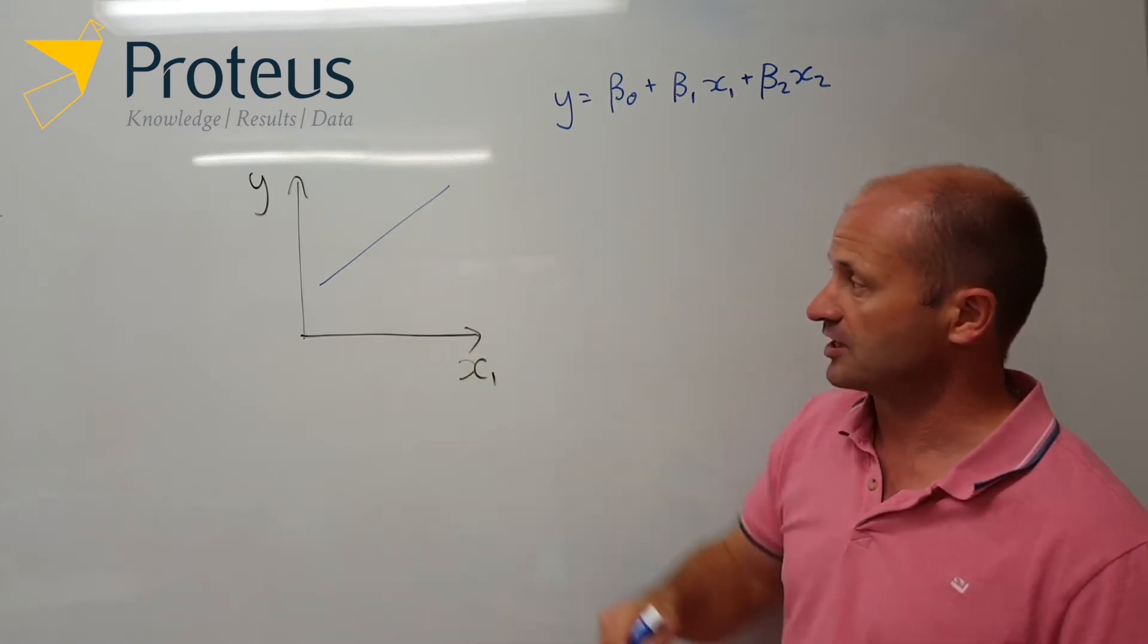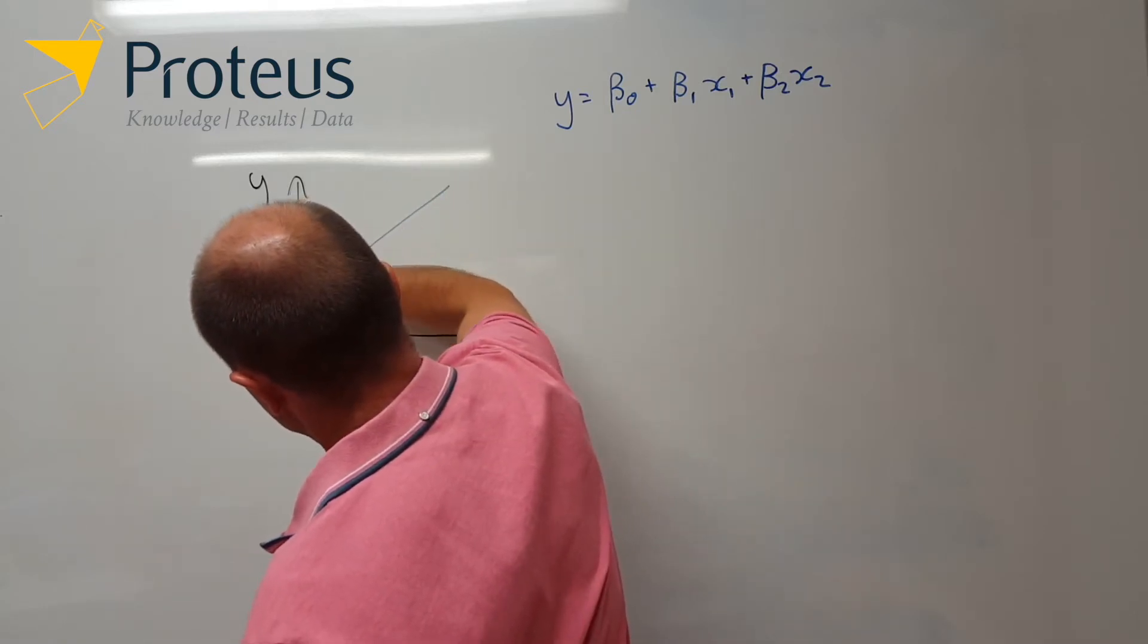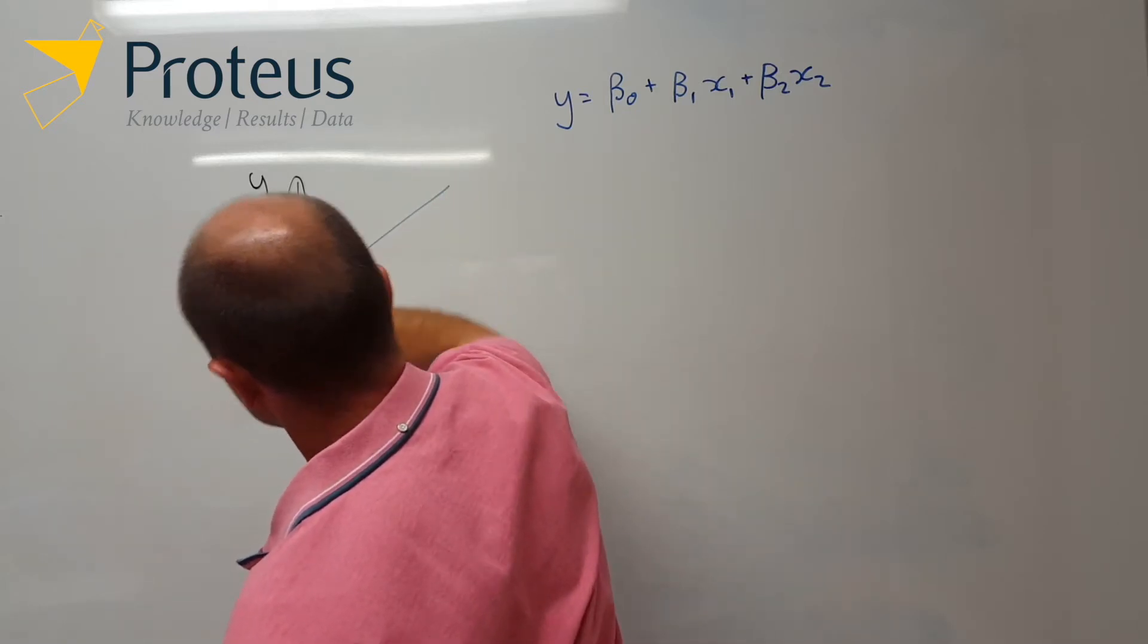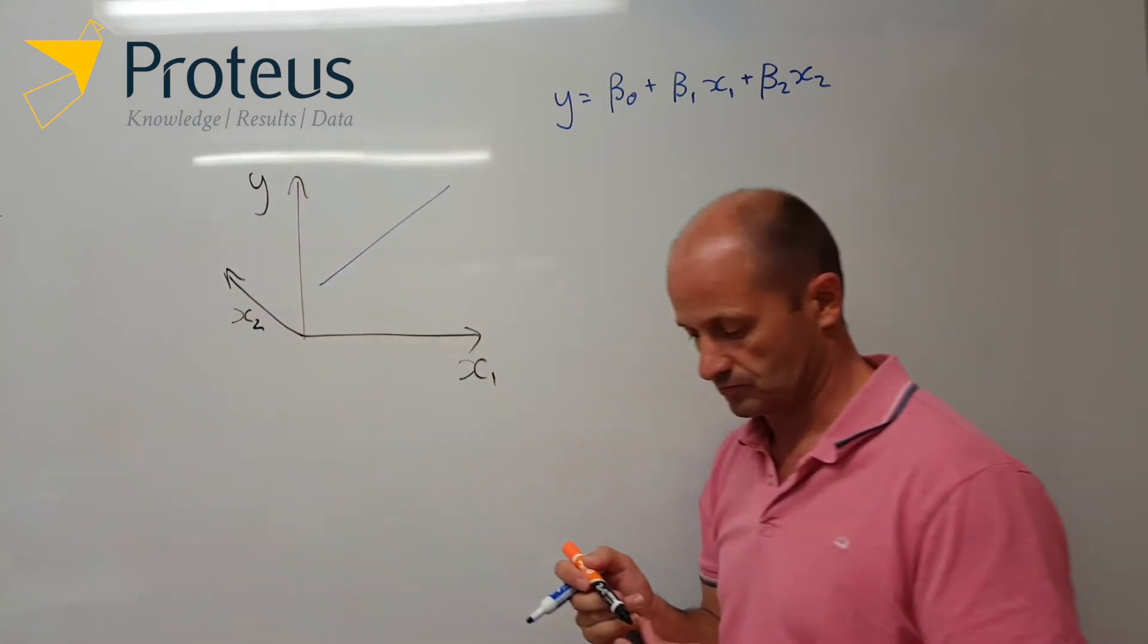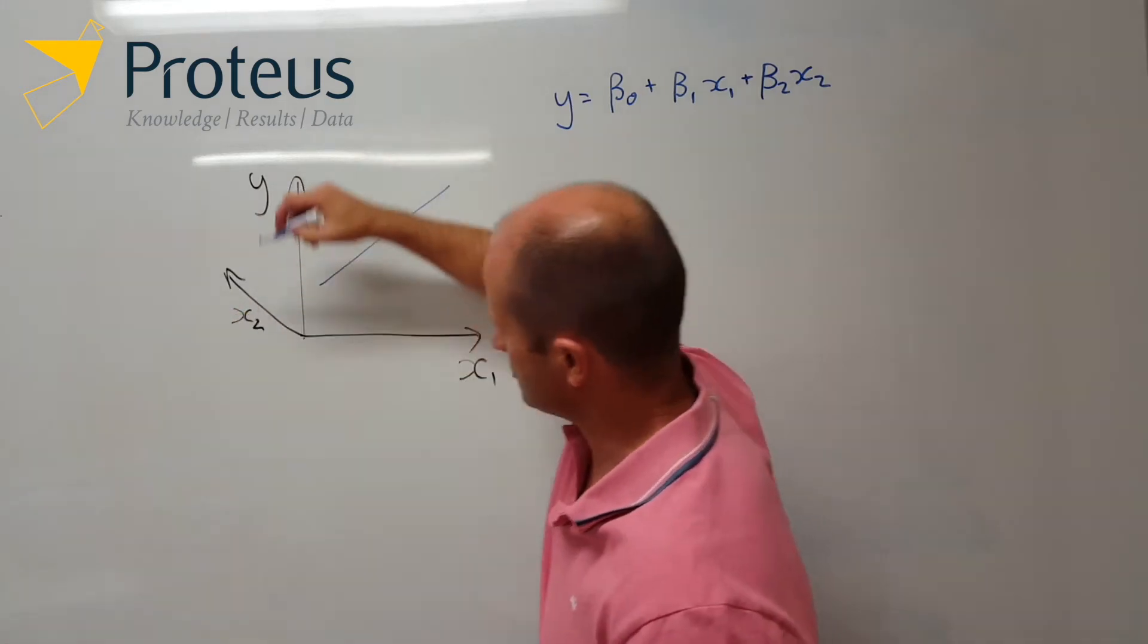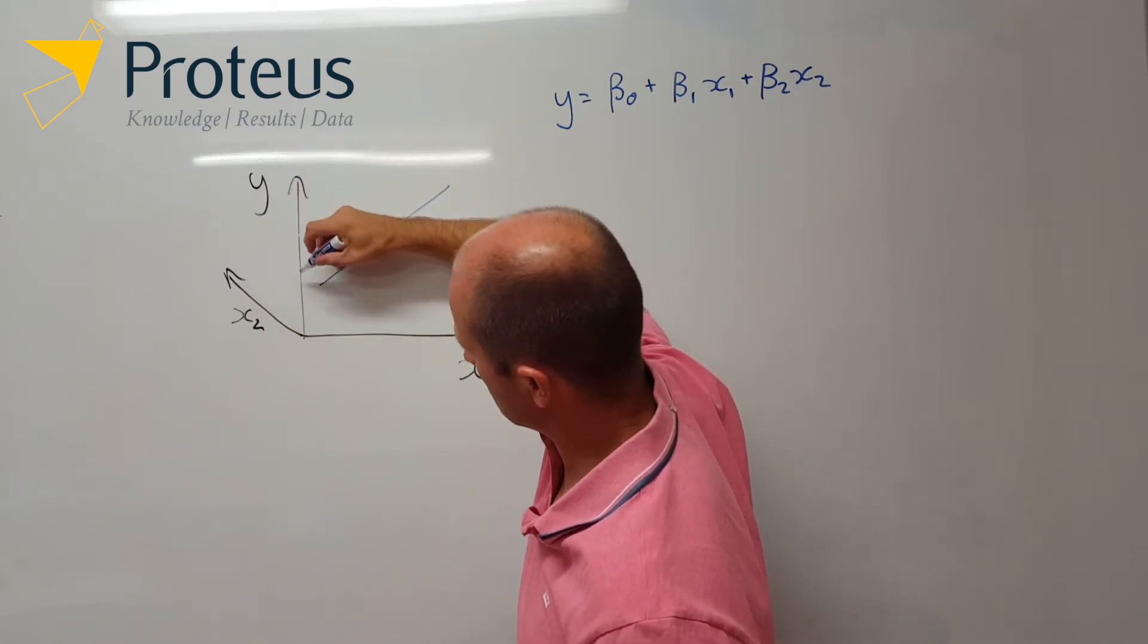And if we think about what that may look like, we could do the second plot. Or alternatively what we have is we've got this other dimension here now, which we're going to label x2.